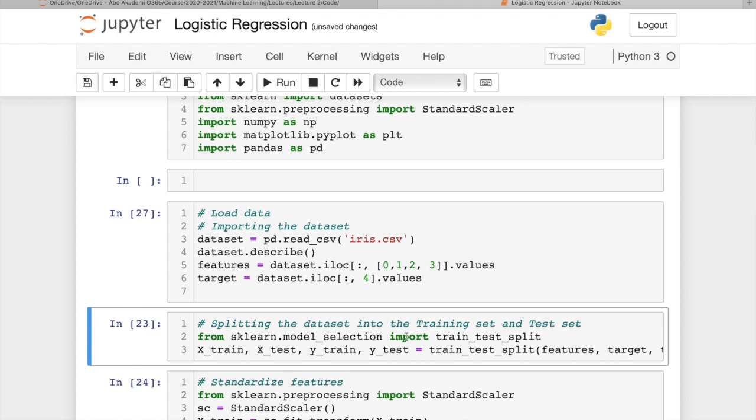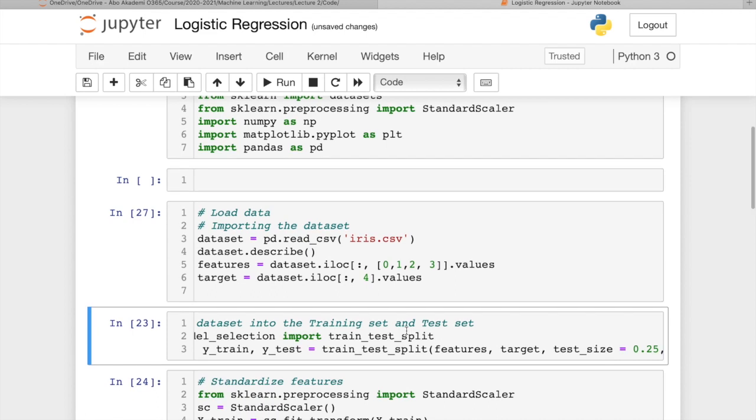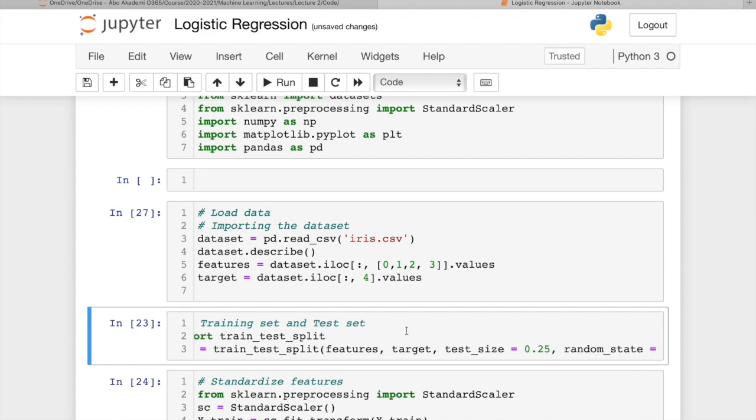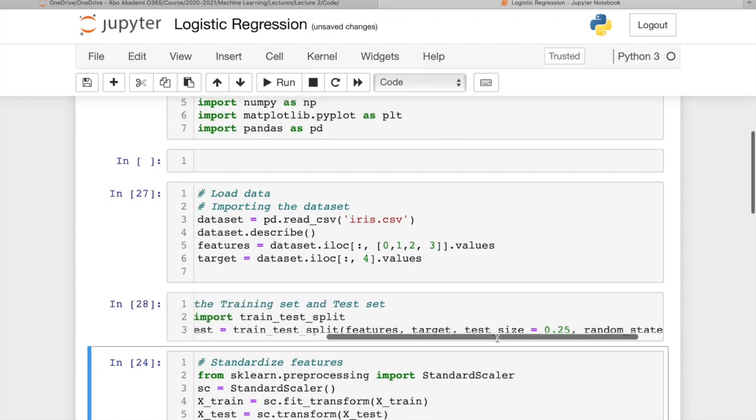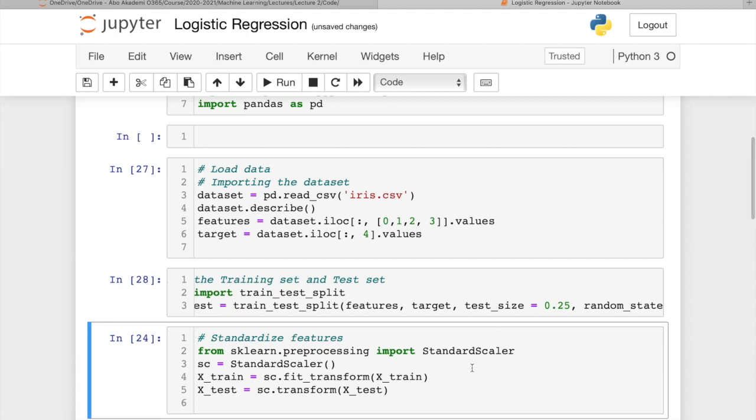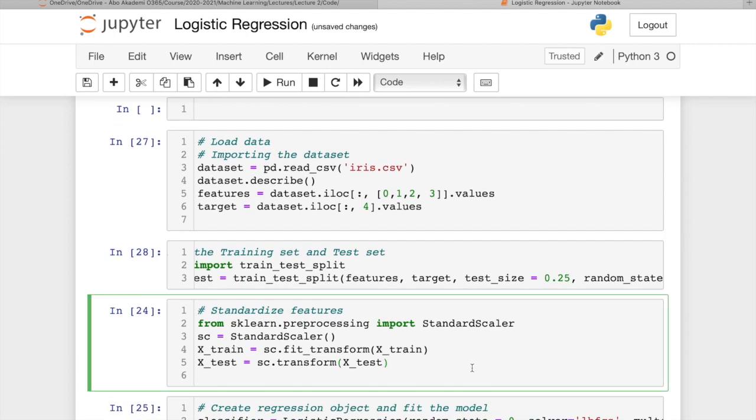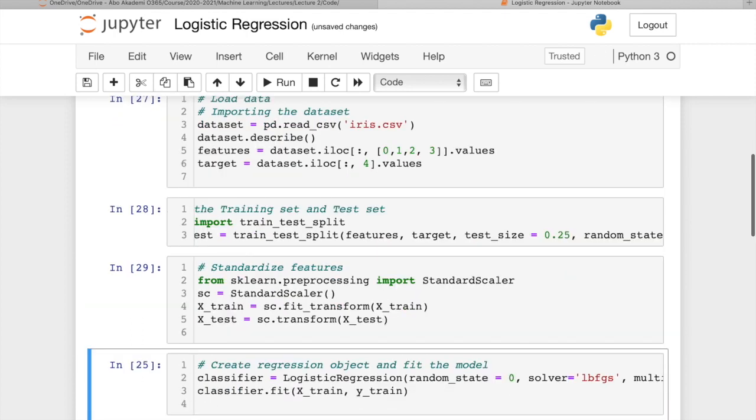And as we did in linear regression, again, we need to split the dataset into training and testing datasets. And just for the fun of it, I changed the value here now. I keep 75% of the data for the training dataset and the rest for the testing dataset. I also standardize the features that we have. I'm scaling them here.